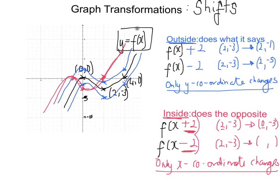For f(x−2) — take away two inside — we add two to the x coordinates, doing the opposite. So going back to the original black curve: (0,0) moves to (2,0), (2,−3) moves to (4,−3), and (4,0) moves to (6,0). The graph shifts to the right.